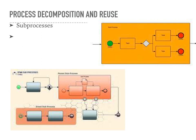Sometimes subprocesses embedded in the parent process model aren't enough — sometimes they need to be reused with other process models. That is where global subprocesses come into play. In BPMN, global subprocesses are reusable subprocesses that can be defined at the global level and referenced from multiple process models. They provide a way to standardize and centralize the modeling and implementation of common subprocesses across different processes within an organization. Global subprocesses promote reusability, consistency, and maintainability of complex subprocesses, and allow organizations to define and manage standardized subprocesses in a centralized manner, reducing duplication and ensuring process consistency.